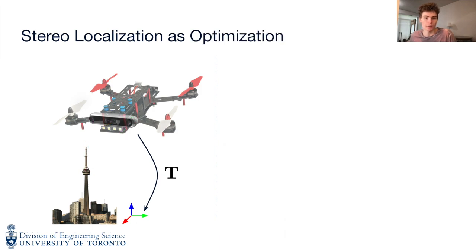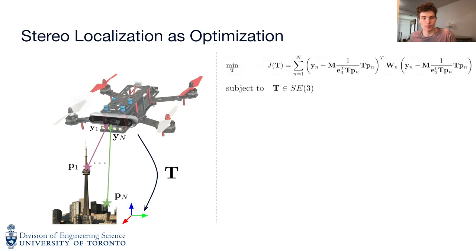Localization can be framed as an optimization problem. Given n measurements from known landmarks with known point pixel correspondences, we minimize the reprojection error, the difference between the pixel space measurements and those obtained from the measurement model with pose T. Each w sub n is a weight matrix encoding pixel space uncertainties.